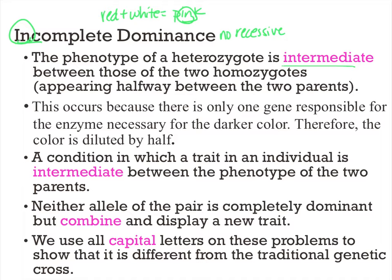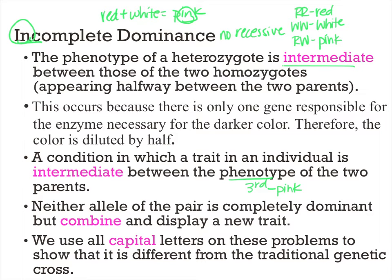It actually produces a third phenotype — rather than being red or white, it produces a third phenotype in the heterozygous individual. In this case that would be pink. You don't have one that's completely dominant over the other. So you'd use big R big R for red, big W big W for white, and then the heterozygous RW would be pink. They'd all be capital letters.